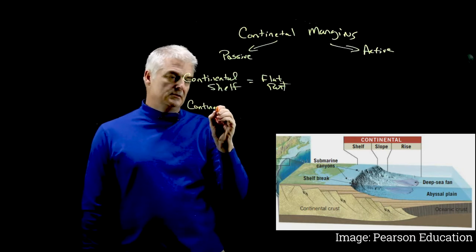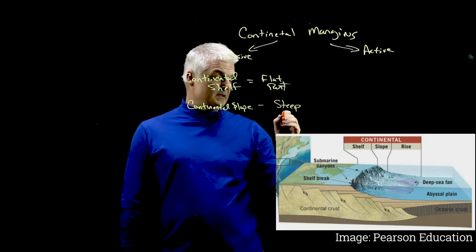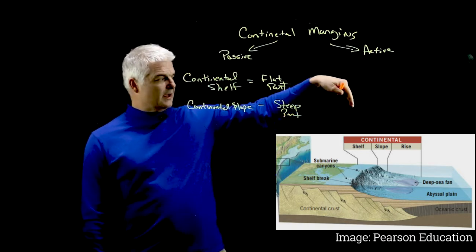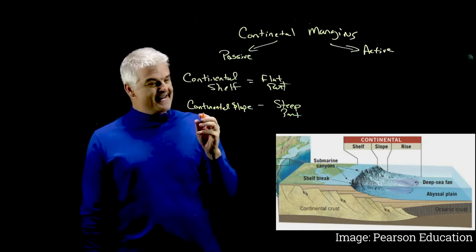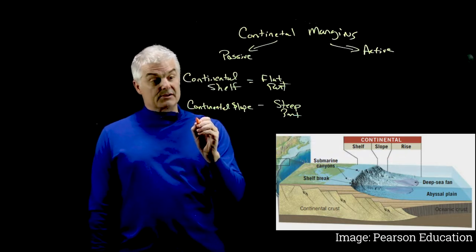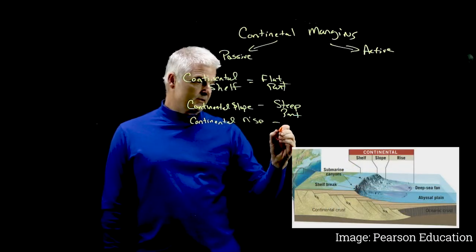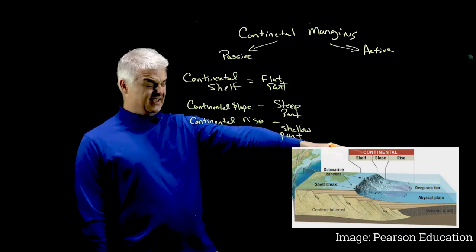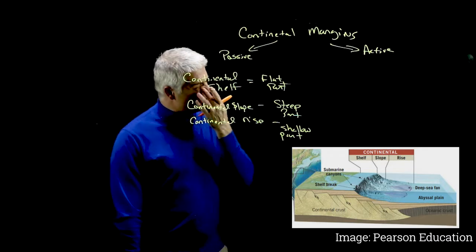The second one is the continental slope, and that would be the steep part. You see that over there? So the actual continent actually sort of extends into the ocean, and then it dives deep down, down, deep, down, deep in my soul. And then, of course, there's also just a gentle slope up, and that's called the continental rise, and that's the shallow part. It's still got a steepness to it, but it's not as steep.